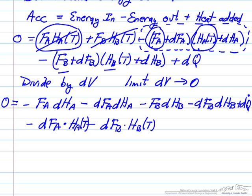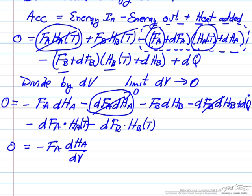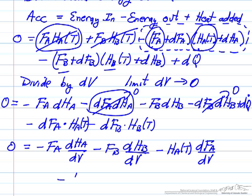So now we're ready to actually do the division by dV, and so a couple of things to note. If we divide by dV, we would have the flow rate of A times dHA over dV. Second term, we'd have a differential multiplied by a derivative, so those differentials go to zero, likewise for this other second order term. So we know, simplifying quite a bit, the third term, HA evaluated at T, the derivative of FA with respect to V minus HB evaluated at T, these are the last two terms in the equation, dFB dV plus dQ dot dV.